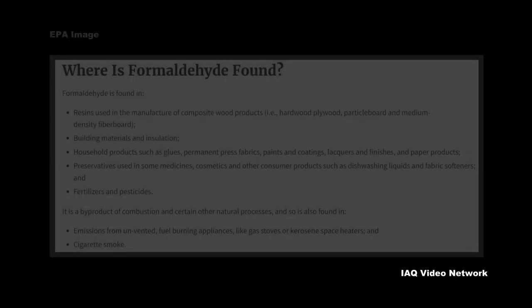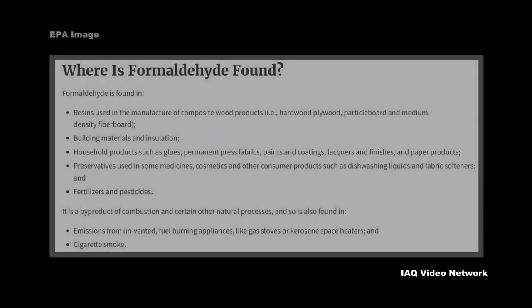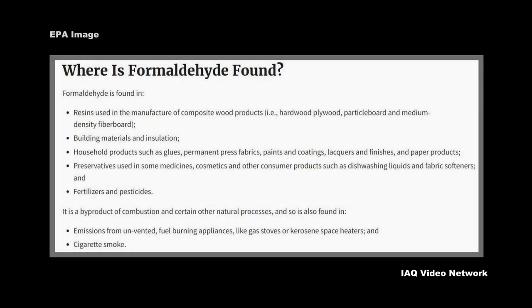Sources of formaldehyde in the home include building materials, smoking, household products such as nail polish and permanent press fabrics, and from the use of unvented fuel burning appliances, including gas stoves or kerosene space heaters.